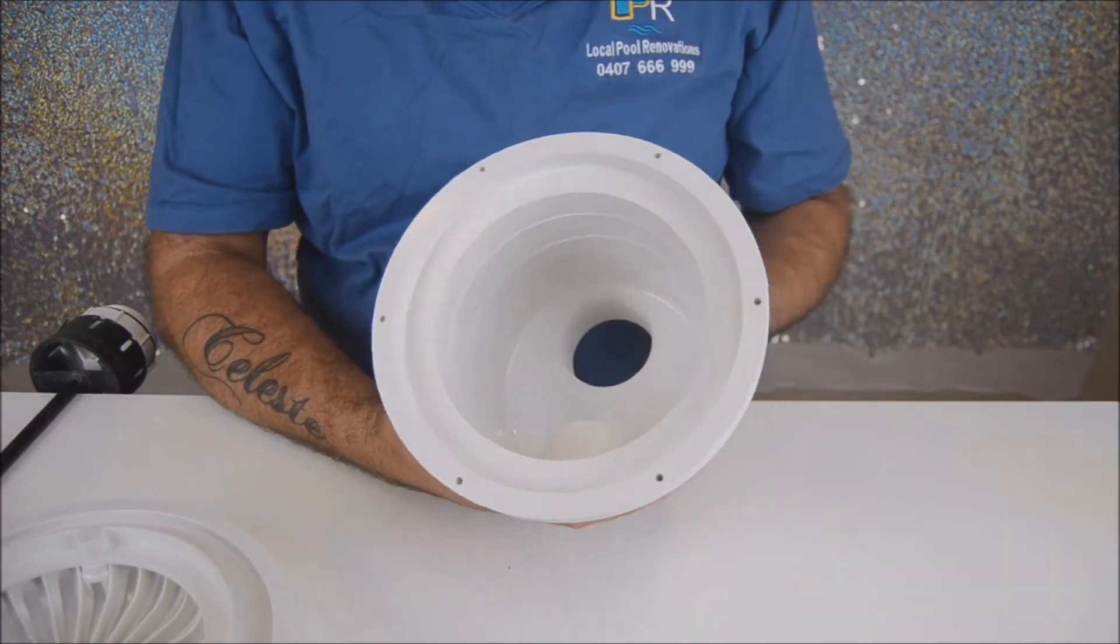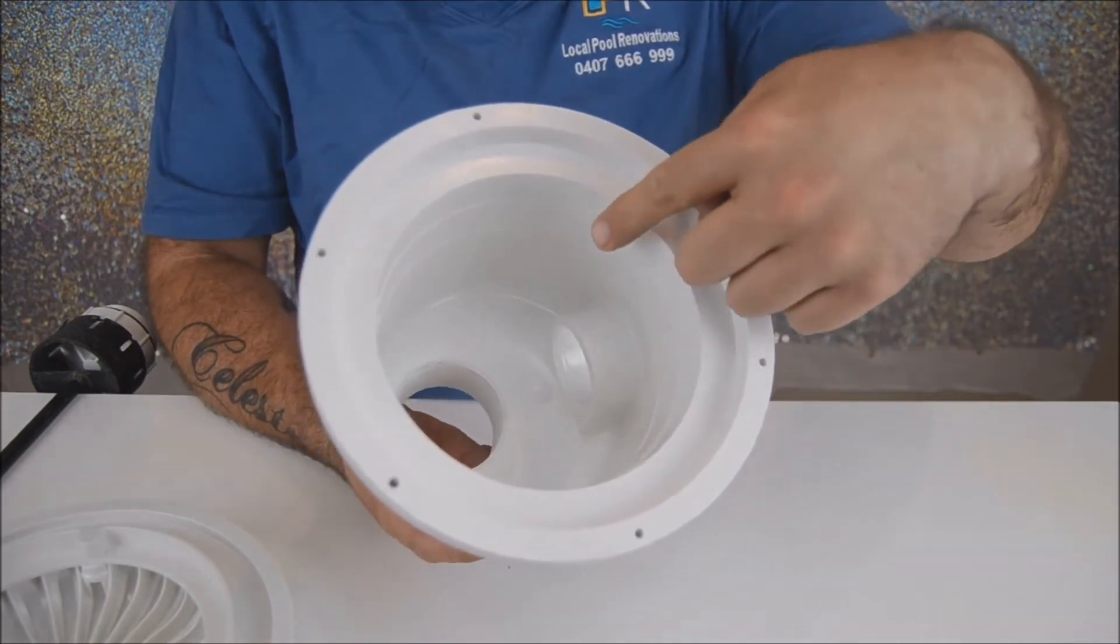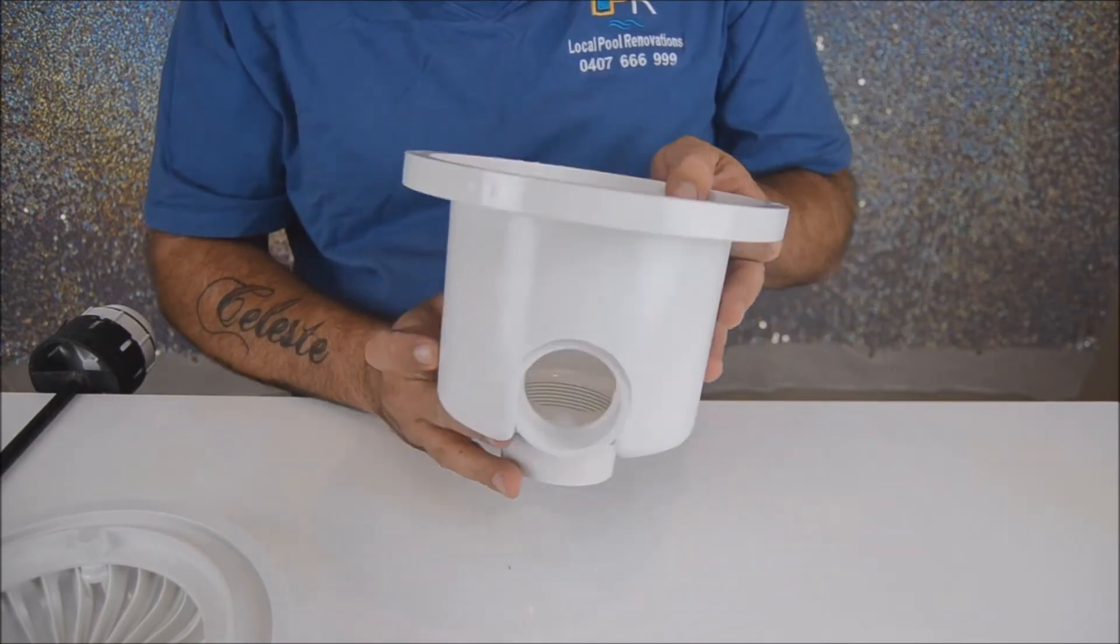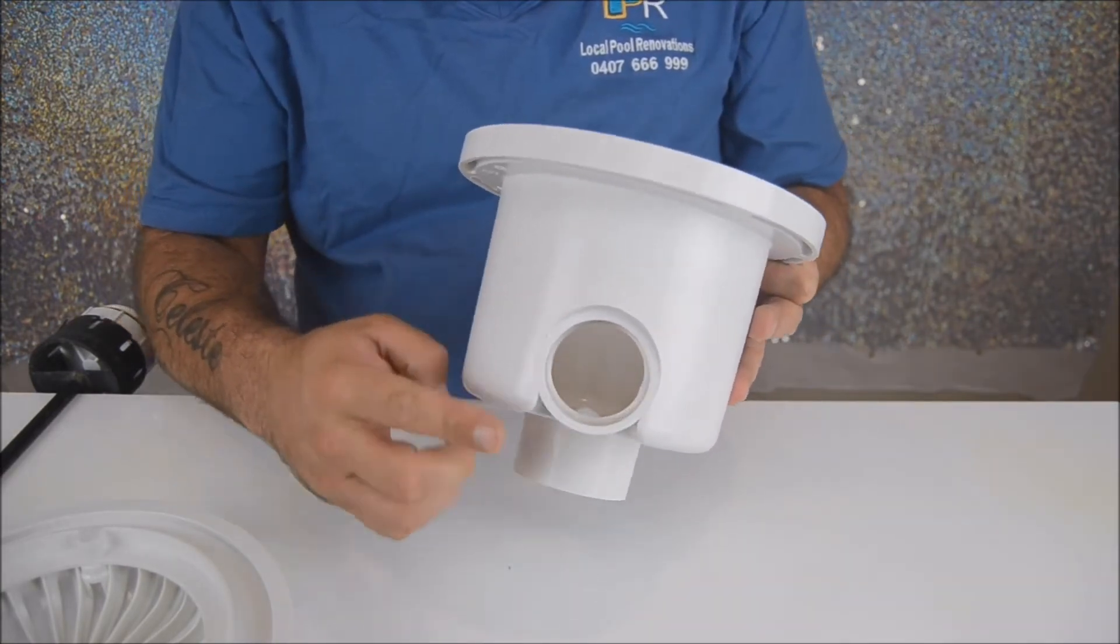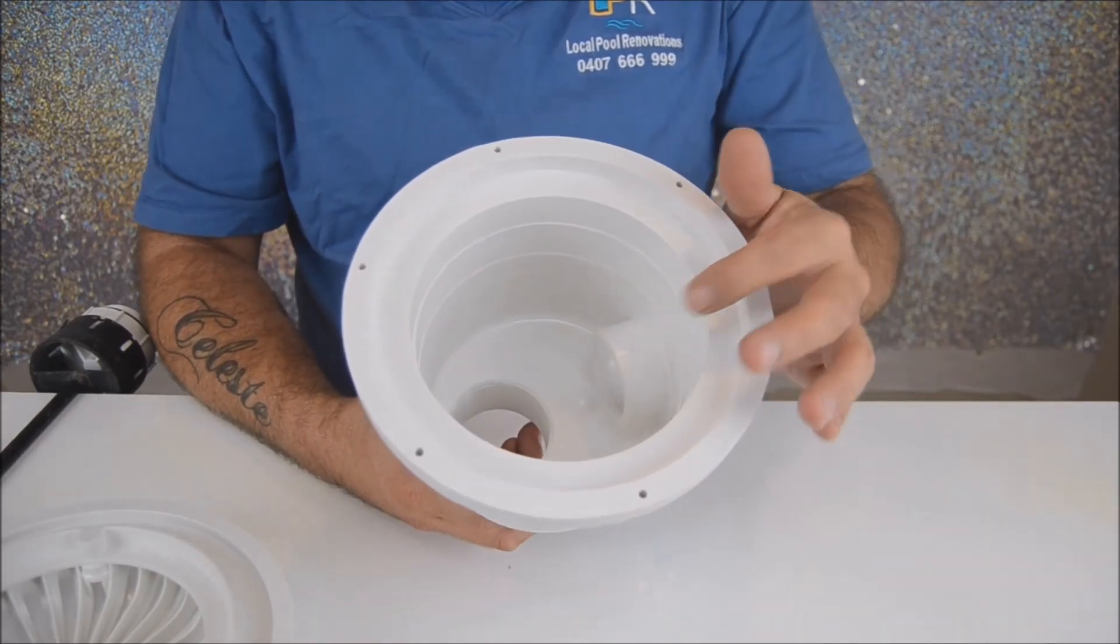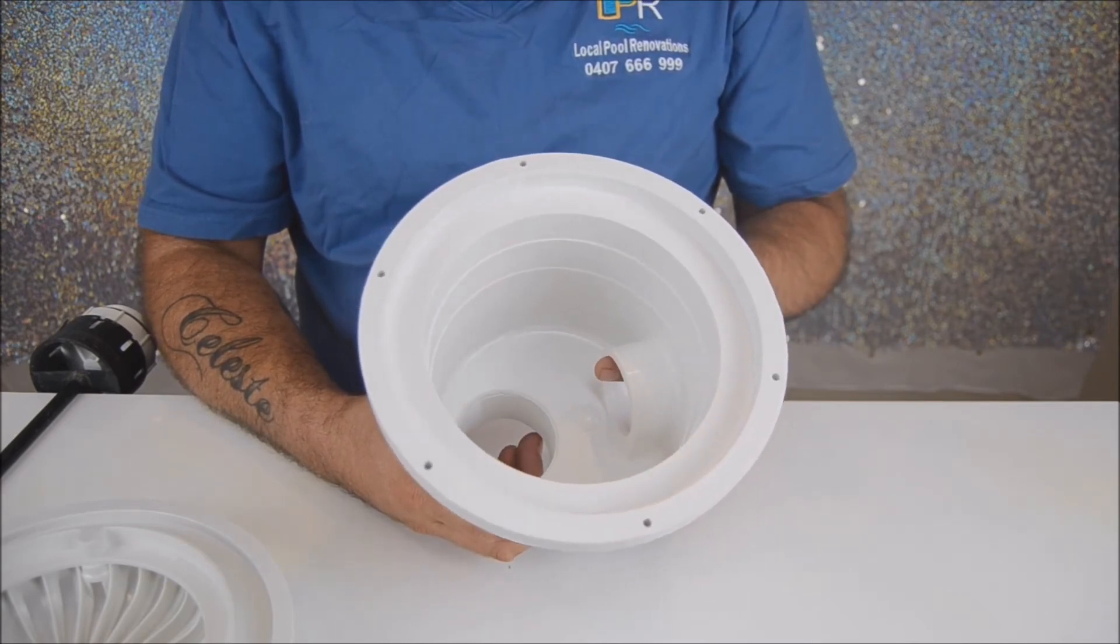You will notice that at the side of your main drain there may be another hole. That hole through the side connects to the skimmer box. In most cases you will find that hole is already blocked because that system does not tend to work.